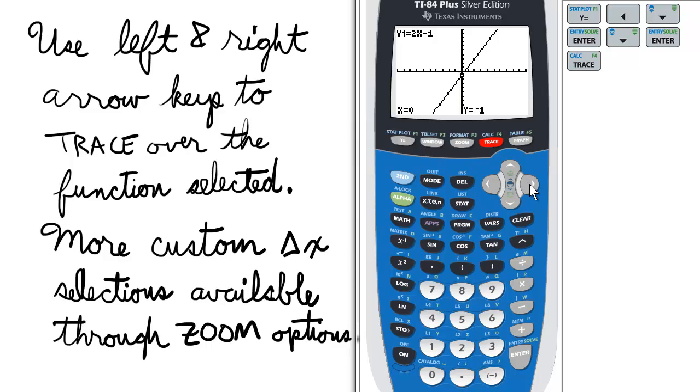Now, every time I press the right or left arrow key, the cursor will move the preset default delta X for my window setting.